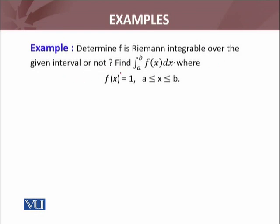The first function is the constant function. Determine whether f is Riemann integrable over the given interval or not, and find the integral from a to b of f(x) dx, where f(x) equals 1 — a constant function — for a ≤ x ≤ b. We are going to find the integral of f(x) dx equals 1.